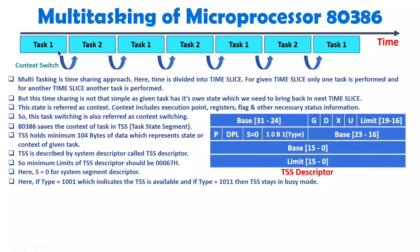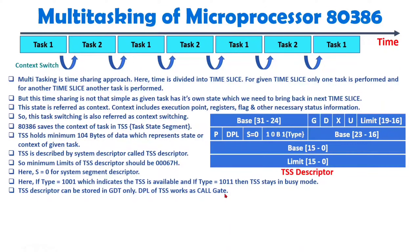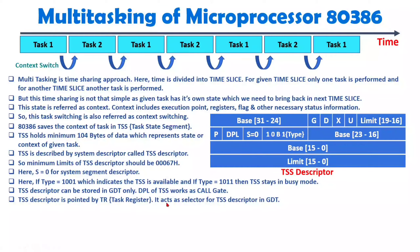Our agenda is to load the context as well as to store the context. The key thing to understand is whether we are allowed to access the TSS — if you are allowed to access the TSS, the 80386 will automatically jump from one task to another task by loading the context. You should know that the TSS descriptor can be stored in GDT only, and it is a system segment descriptor. The DPL of the TSS works as a call gate — it is a kind of subroutine similar to a call gate. The TSS descriptor is pointed to by the TR — Task Register — which acts as a selector, selecting the TSS descriptor inside the GDT.